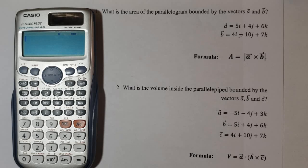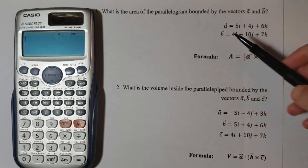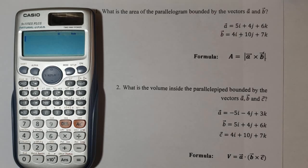So let's work through the first problem. What is the area of the parallelogram bounded by the vectors a and b? We have vector a equals 5i plus 4j plus 6k and vector b equals 4i plus 10j plus 7k. Well, whenever you are asked to find an area of a parallelogram and you are given vectors, all you need to know is that the area of the parallelogram equals the magnitude of the cross product of the two vectors.